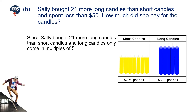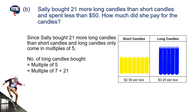The number of long candles bought must be a multiple of 5, and 21 more than a multiple of 7. By listing, we can see that this option fits that condition, which is 14 short candles and 35 long candles.